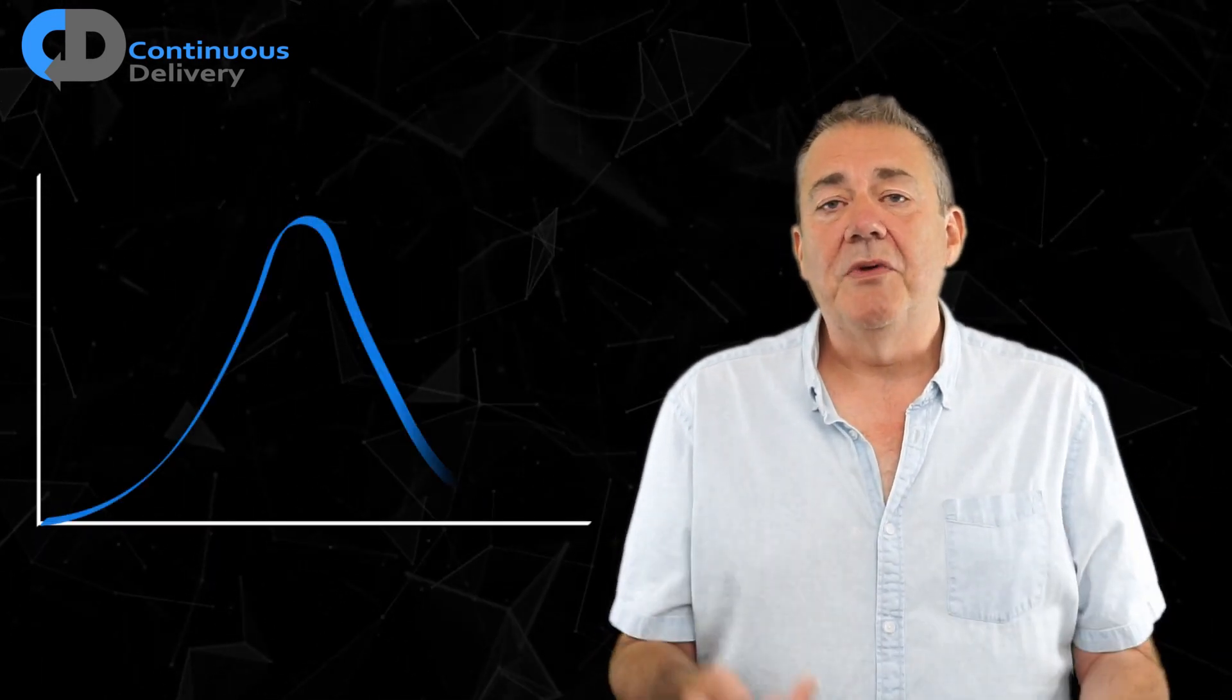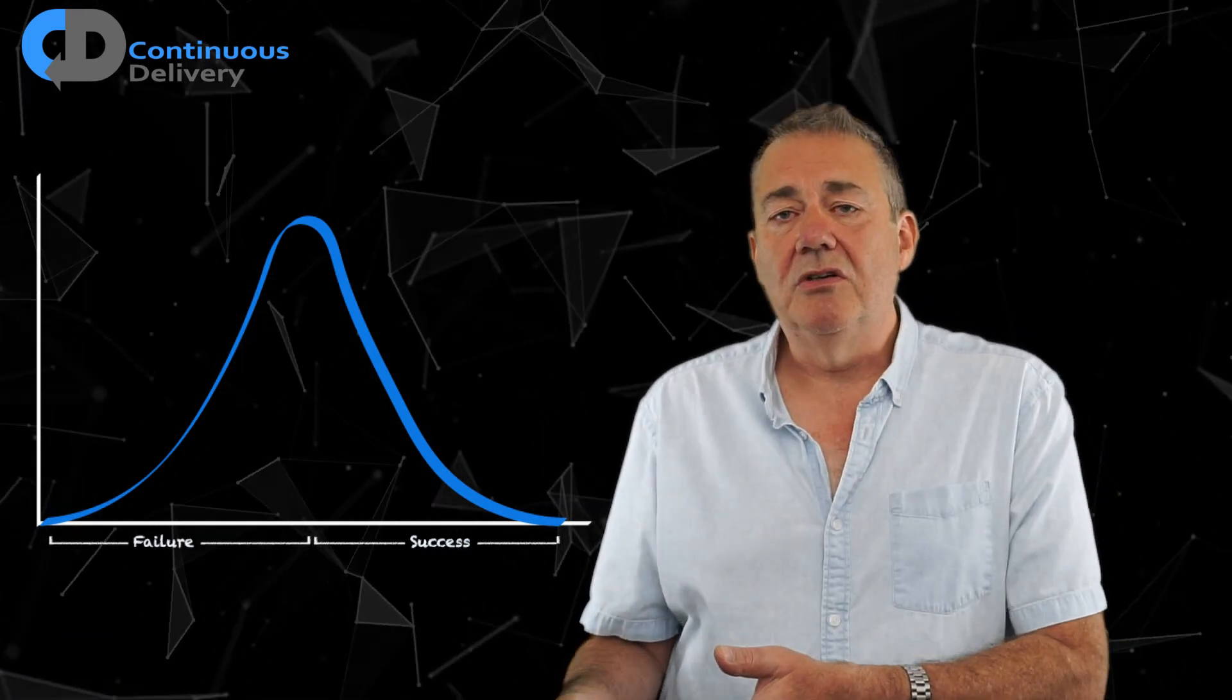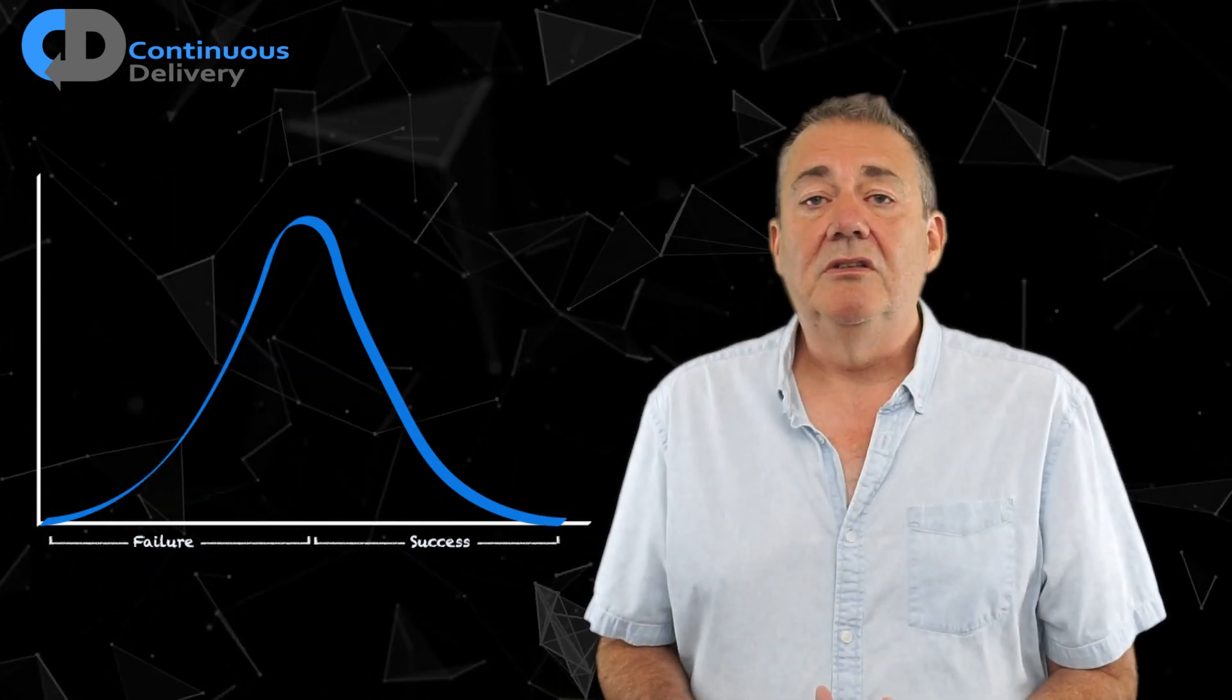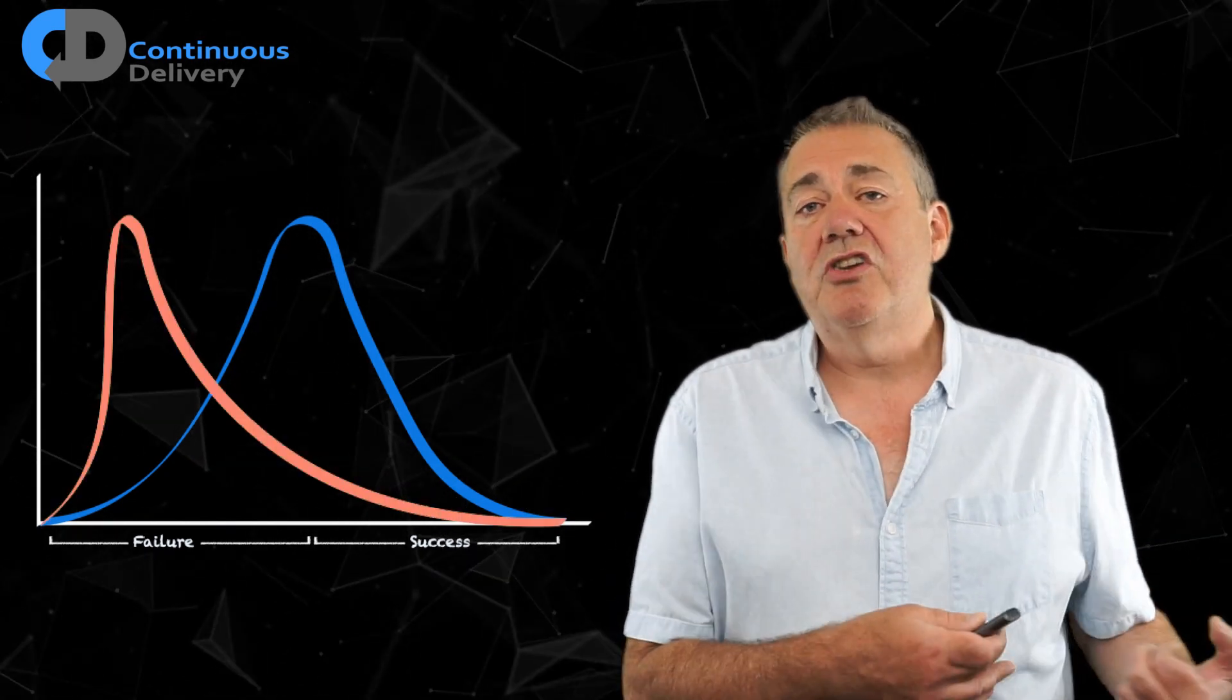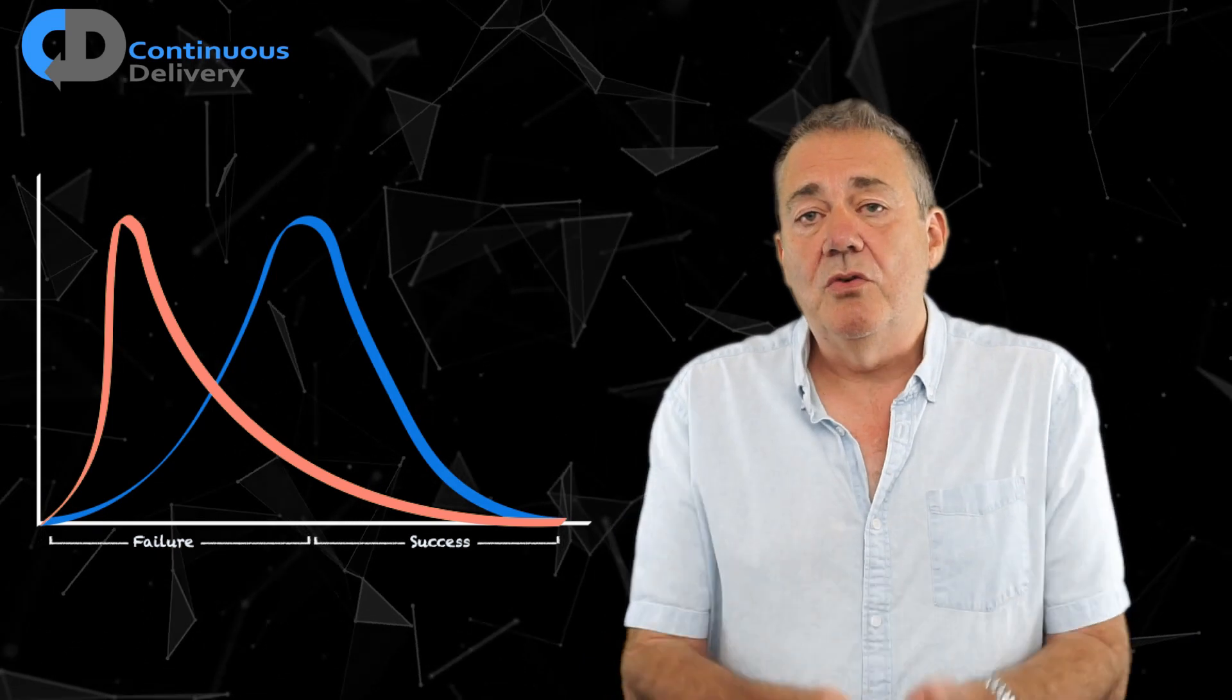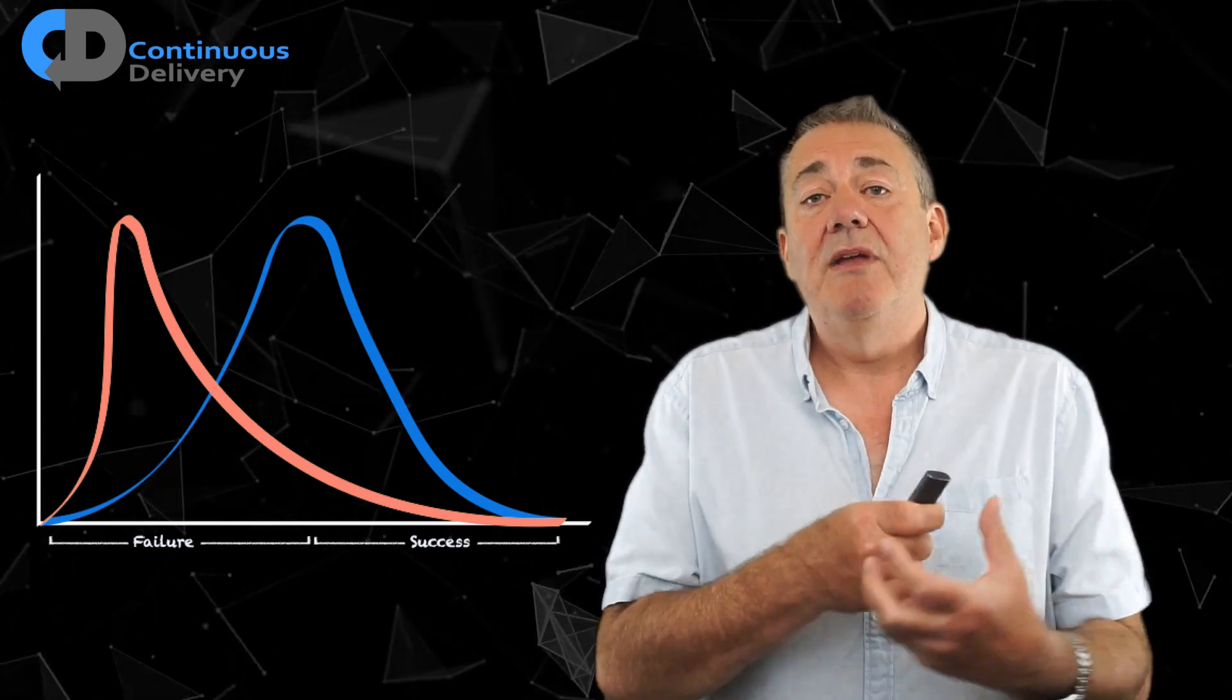I sometimes draw this picture of software projects: if software development was a normal thing, as many software projects would finish ahead of schedule, under budget, delighting their users as finish behind schedule, over budget, and annoying their users. But I don't think that's what we think of as normal in our industry. I think what we think of as normal is much more skewed towards the failure end of the spectrum. Continuous delivery eliminates that kind of picture and we see significantly better results as a result of this practice.